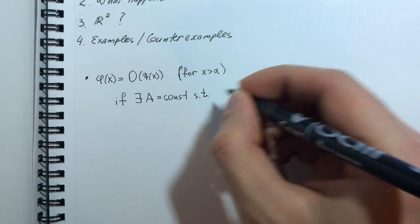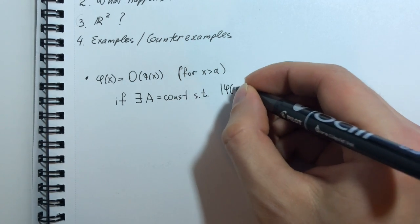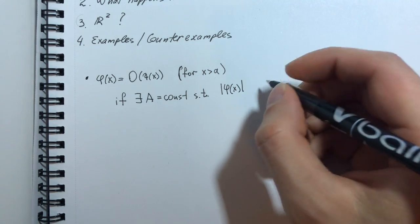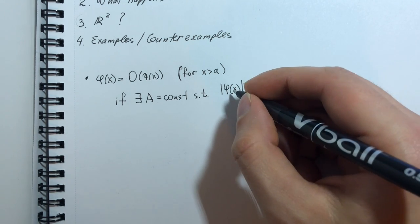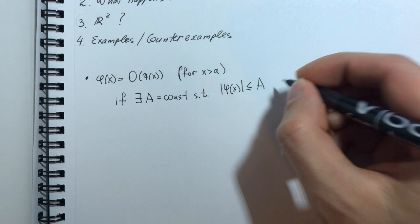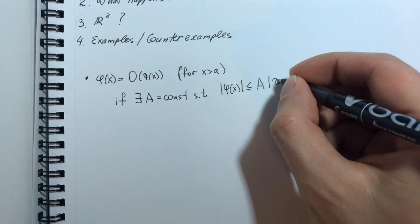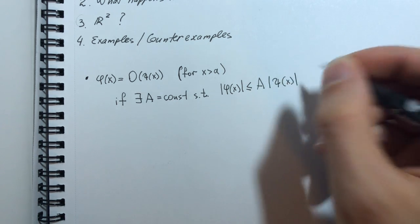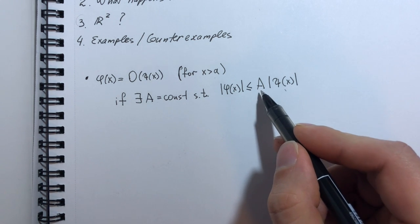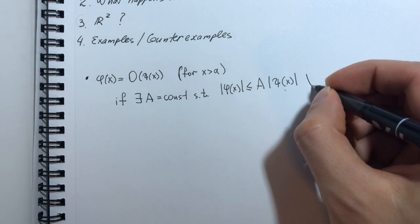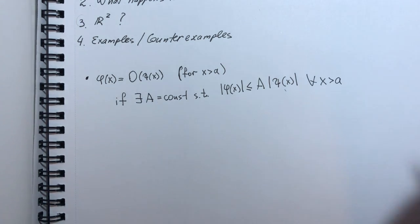if there exists a constant that we call A, such that the absolute value of function phi is always bounded above by the value of xi times this constant. And this holds for all x greater than a. Quite simple.